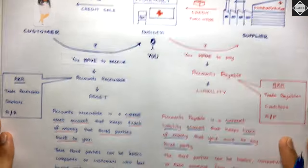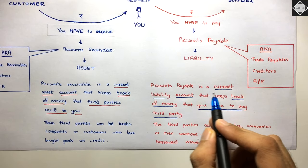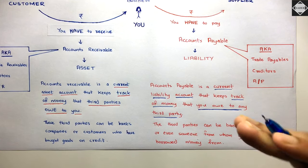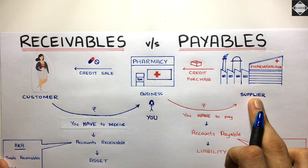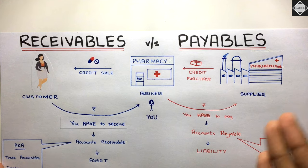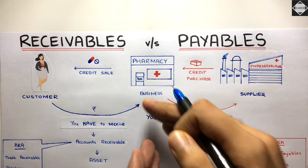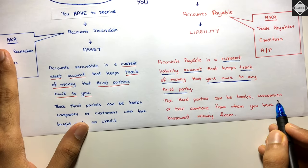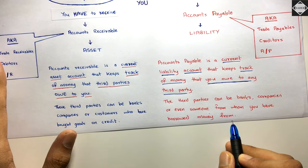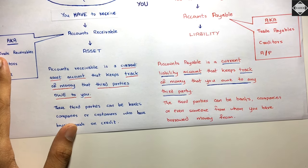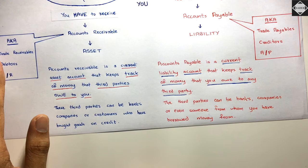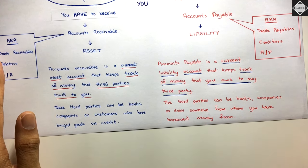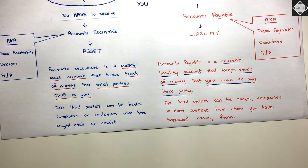Accounts payable is a current liability account that keeps track of money that you owe to any third party — you have an obligation and you have to pay. In contrast, with receivables you have to receive — a future economic benefit. The third parties can be banks, companies, or someone from whom you have borrowed money. If you have borrowed money from someone, you immediately have a present financial obligation to repay after a certain time period.